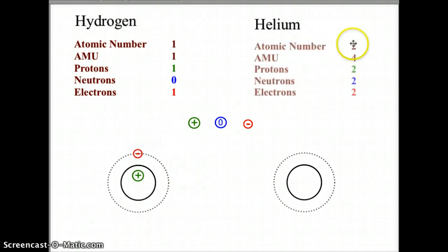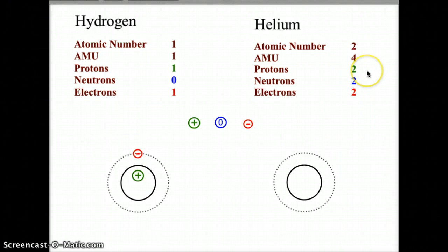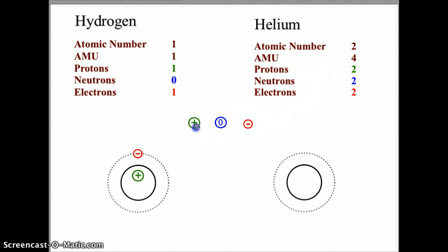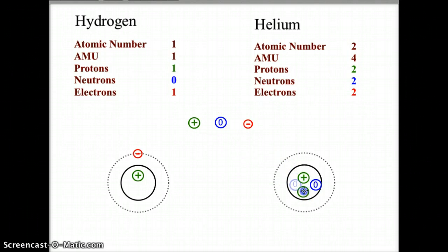If we look at helium, it has an atomic number of two and an atomic mass unit of four. That gives it two protons, two neutrons, and since it is neutral, two electrons to balance out the protons. We would put the two protons in the nucleus, joined with two neutrons, and then the first orbital level would be filled with two electrons.